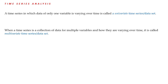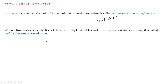Now moving on to time series analysis. In time series analysis, we have two classifications. One is univariate time series analysis and the other is multivariate time series analysis. A time series in which data of only one variable is varying over time is called a univariate time series data set — for example, studying the inflation data for one country alone. When a time series is a collection of data for multiple variables and how they are varying over time, it is called multivariate time series — for example, comparing the inflation of various countries.